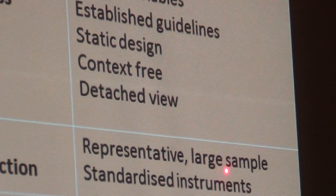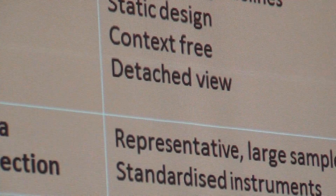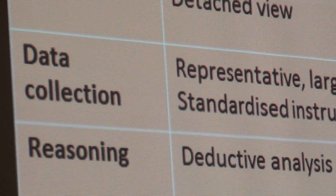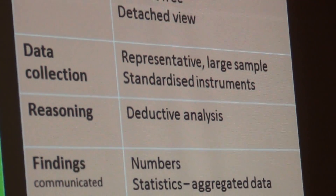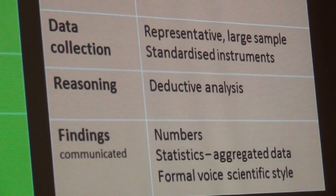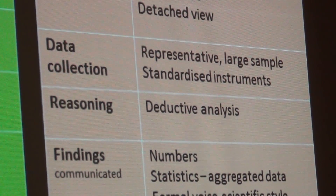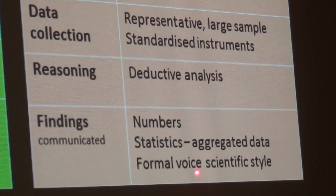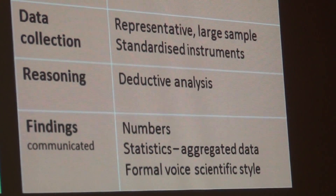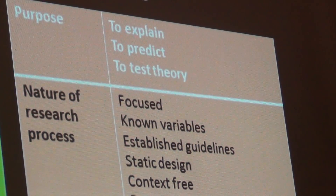You have mostly large samples, and you've got to make sure that they are representative of the population. You've got to have a population as a frame of reference — you refer back to the population, and the sample is a small subset of what happens in the population. Your findings will be communicated in numbers and statistics, and you write in a very formal scientific way. What you're trying to do is to explain, to predict, or to test the theory.